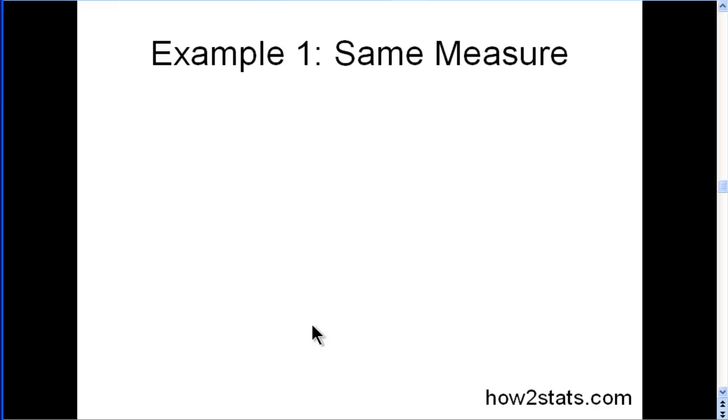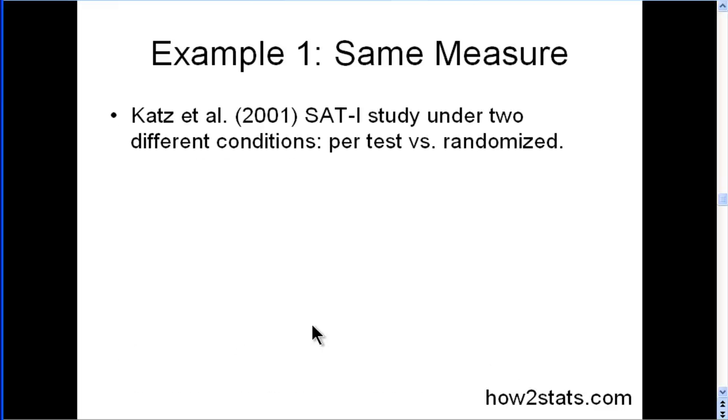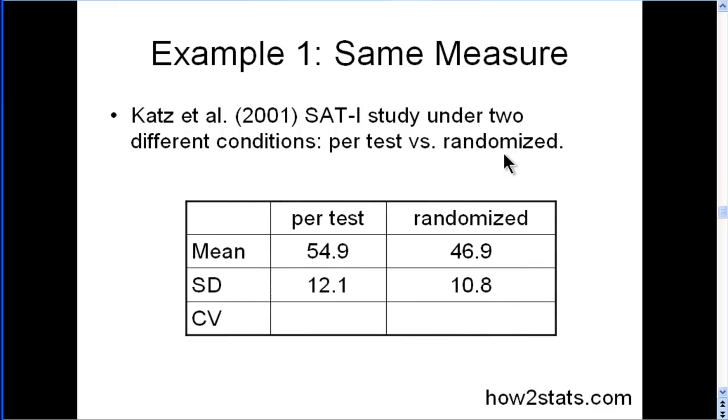Here's one example where somebody uses the same measure. It's a study by Katz et al., where they wanted to examine the SAT scores under two different conditions. One where the test is administered typically, and another case where the answer alternatives are randomized across all items in the test. And they wanted to see what people scored in the two different conditions.